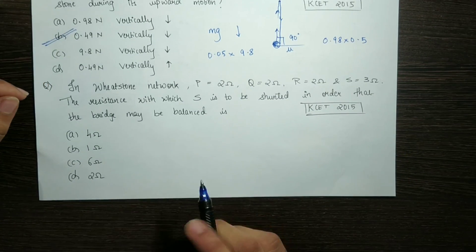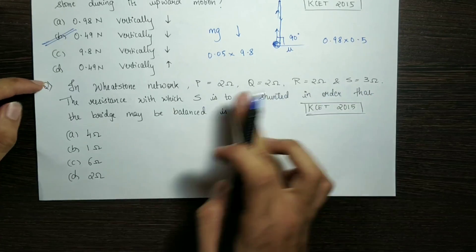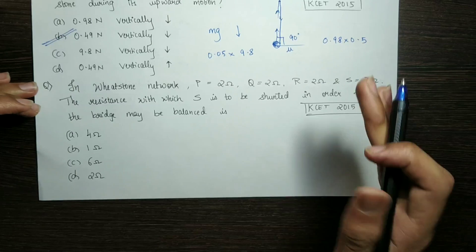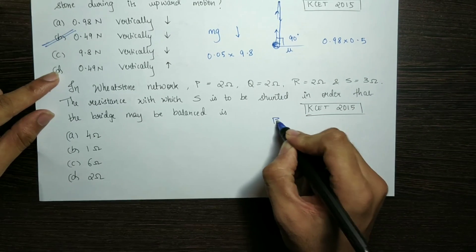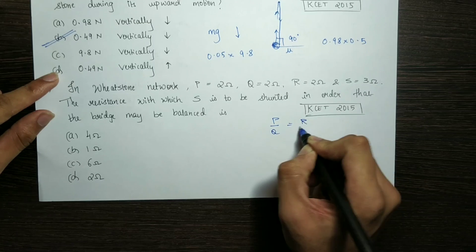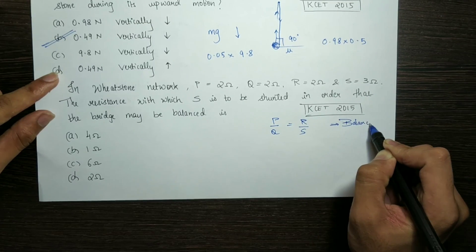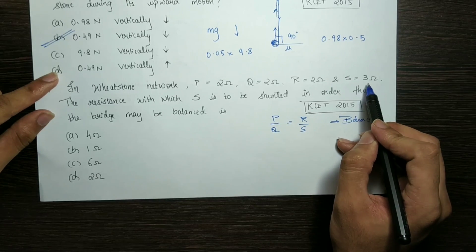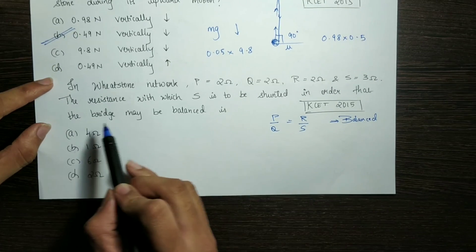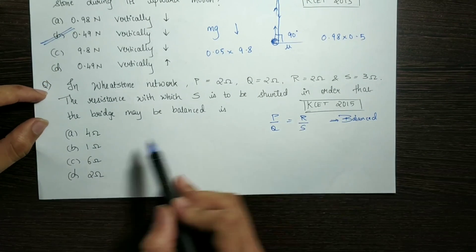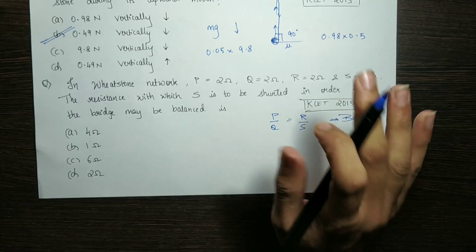In a Wheatstone network, P = 2 ohms, Q = 2 ohms, R = 2 ohms, S = 3 ohms. For a balanced bridge, P/Q = R/S. But clearly it is not balanced, because P/Q = 1 but R/S = 2/3. The question is: what resistance must S be shunted with in order that the bridge may be balanced? Since the bridge is not balanced, the shunt is not balanced.